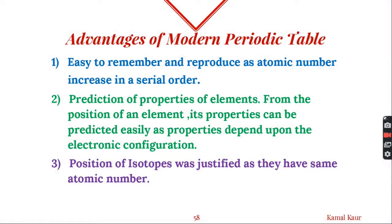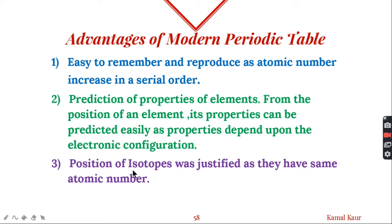The modern periodic table removed many limitations of Mendeleev's table. It is easy to remember because it is based on atomic numbers which increase in serial order. Atomic number links to electronic configuration and hence to properties. The position of isotopes is also justified since all isotopes have the same atomic number — for example, carbon-12 and carbon-14 both have atomic number 6.